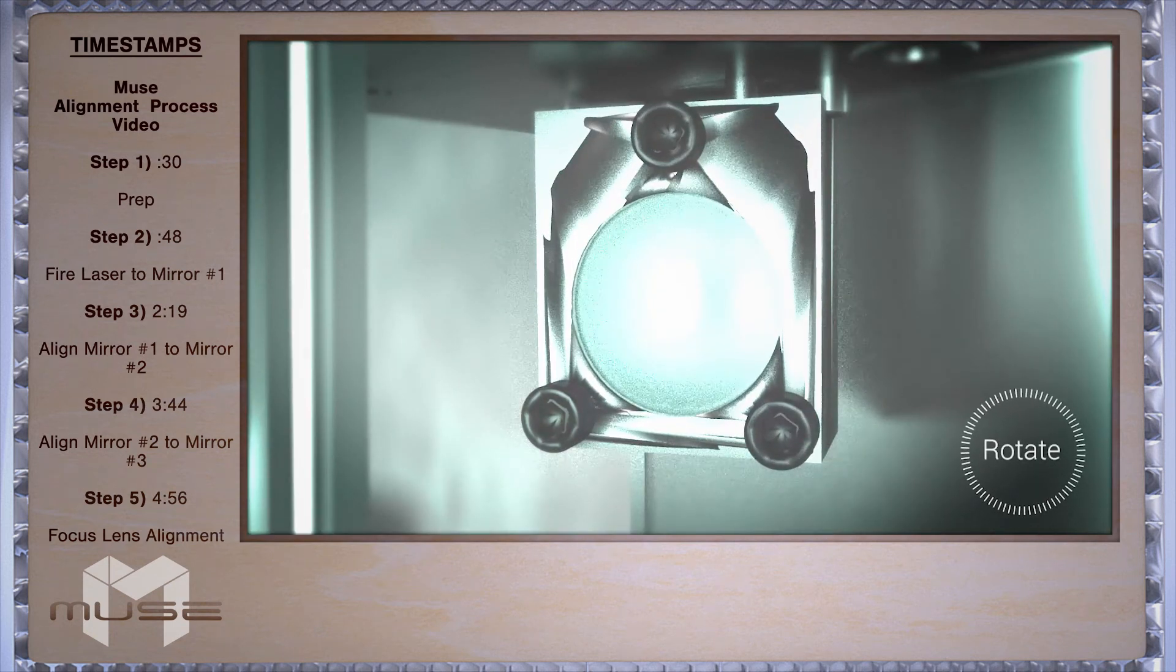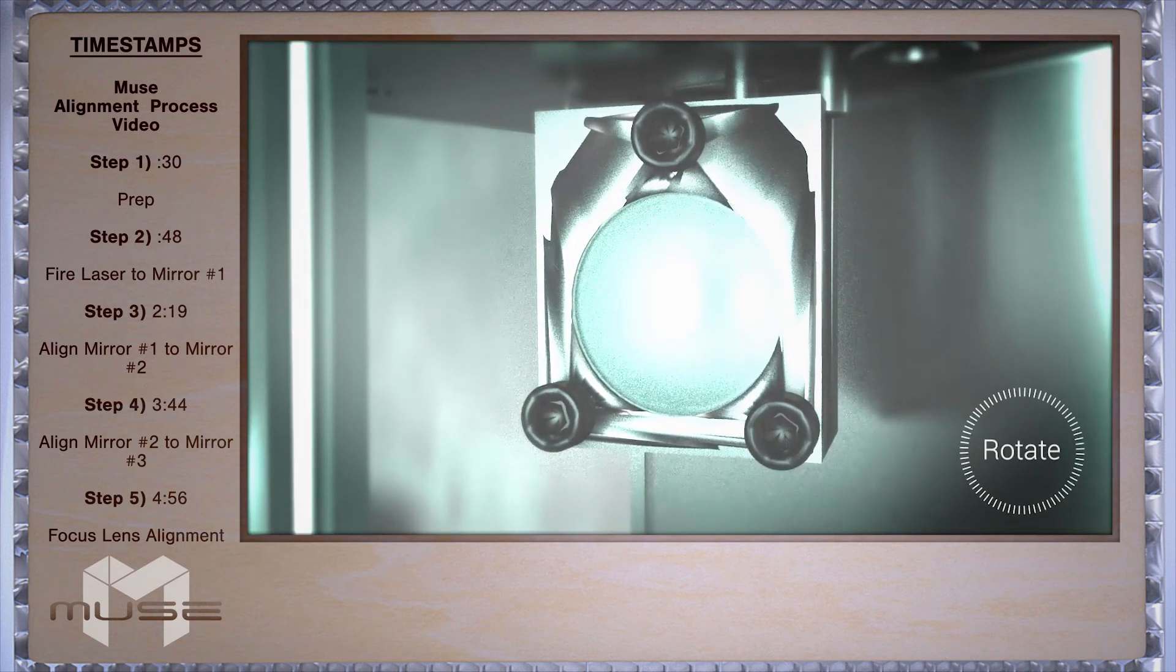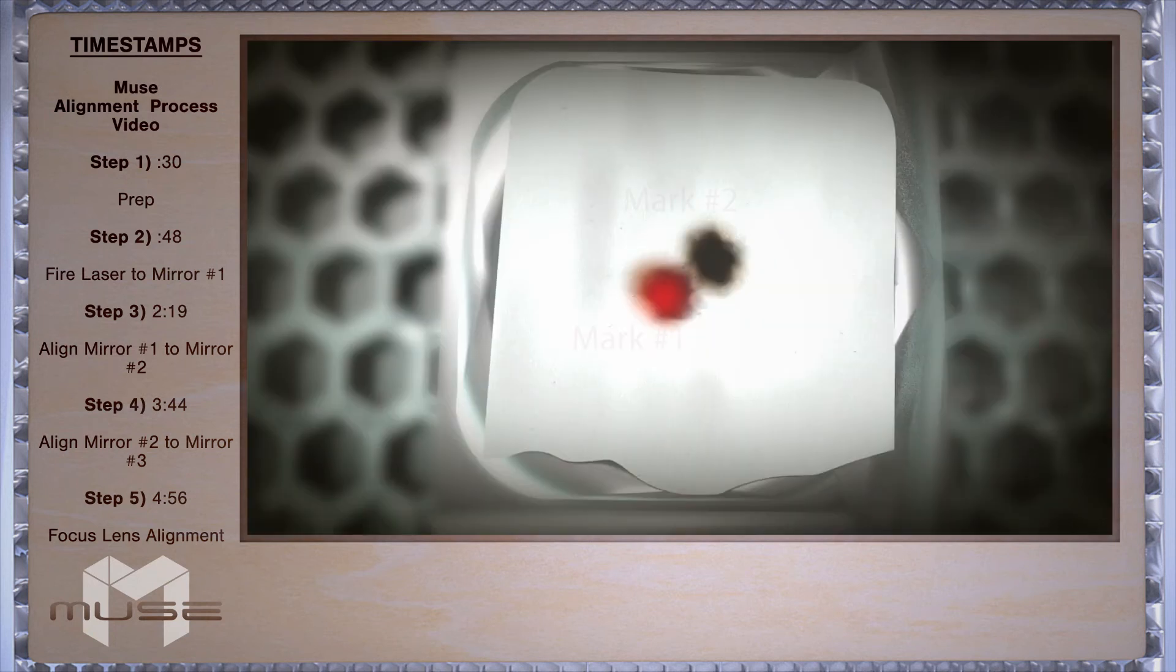Remember that we're adjusting mirror two and not the red beam diode. Position the screws on mirror two so the burn mark is under the red dot diode. Remember the further you are away from the tube the harder it is to align these dials. Simply be patient, meticulous and you'll get there.